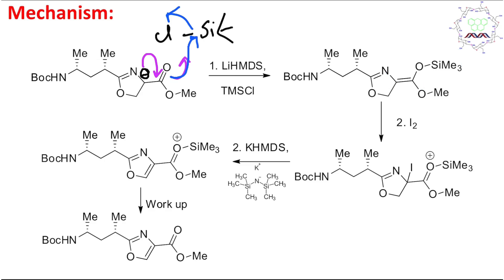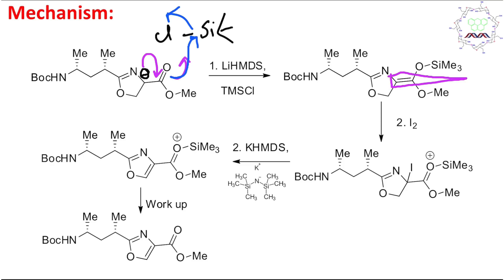This ultimately produces a silyl enol ether — 'enol' because of the enol portion, and 'ether' because of the oxygen-silicon bond. This enolate is trapped as a silyl enol ether. I have already discussed many lectures on silyl enol ethers, which you may visit for better understanding. This enol ether portion is essentially an activated alkene.